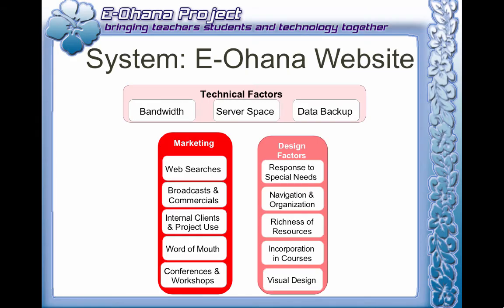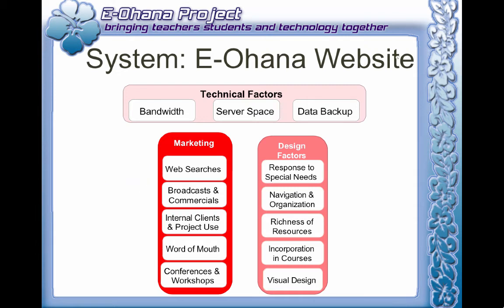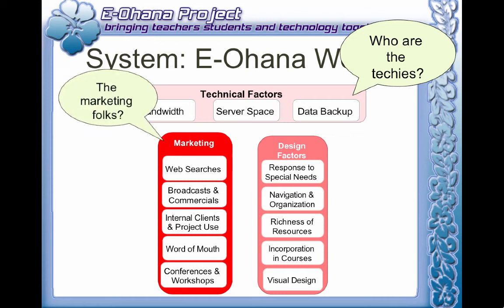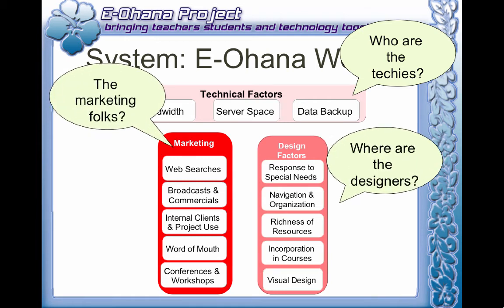Our next system is interesting because it involves a website. The problem is, when you look at the system page — yikes — there are no people. Remember, people are always an important part of the system. Ask yourself: who are the techies, where are the marketing folks, where are the designers? These are the things that need to be spelled out. Even though it's okay to have this as part of your analysis, it's important that you include the humans as well.